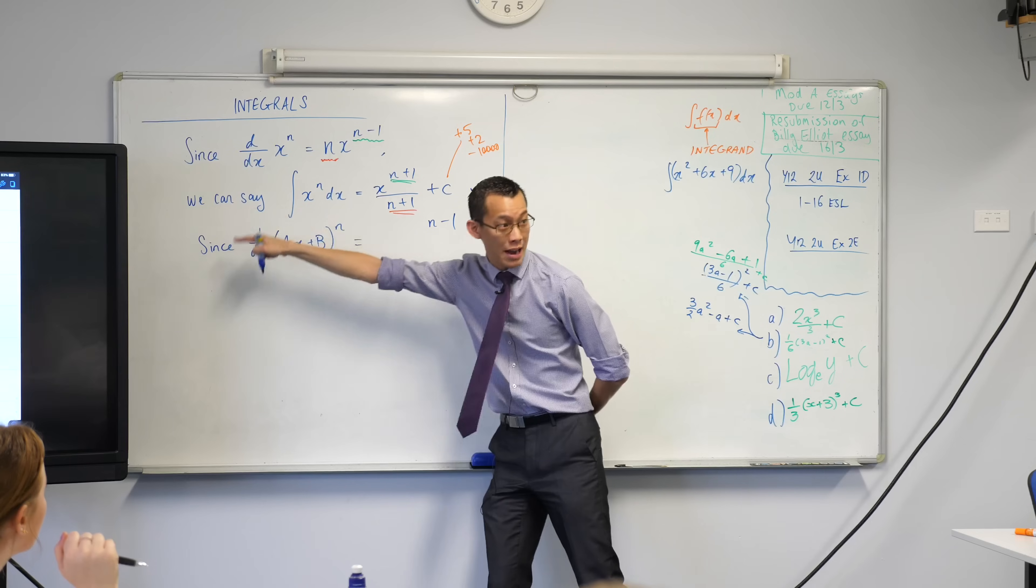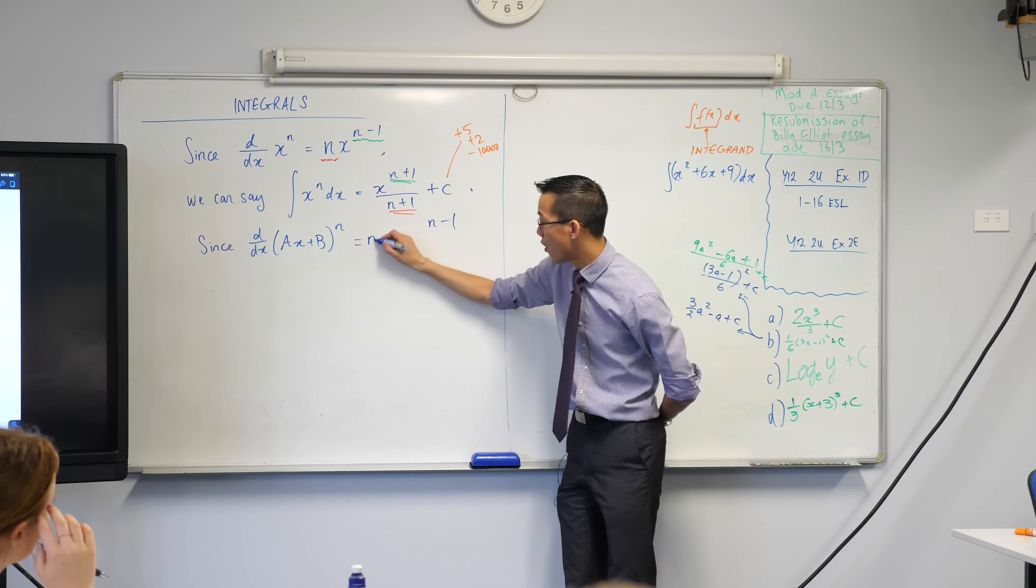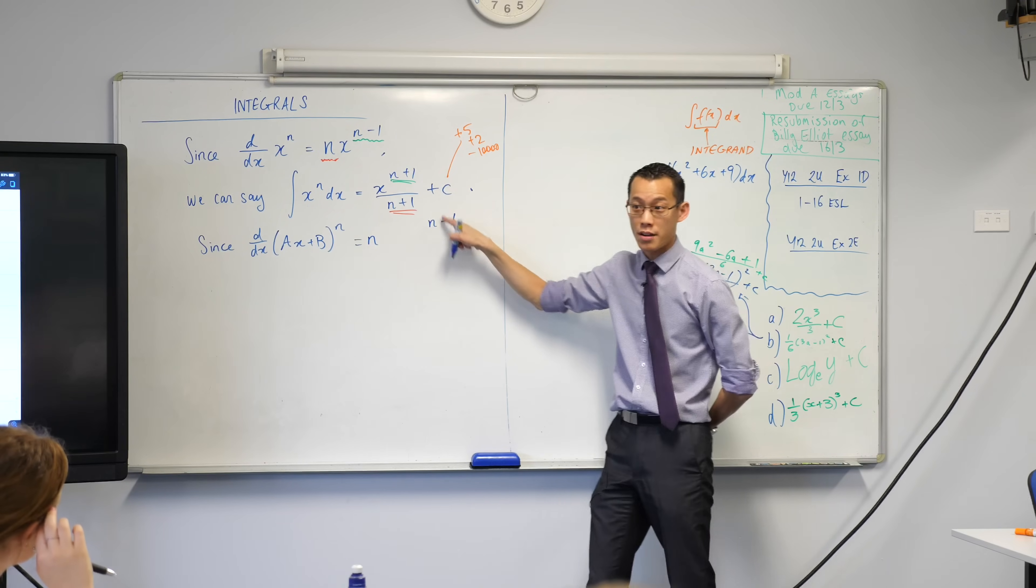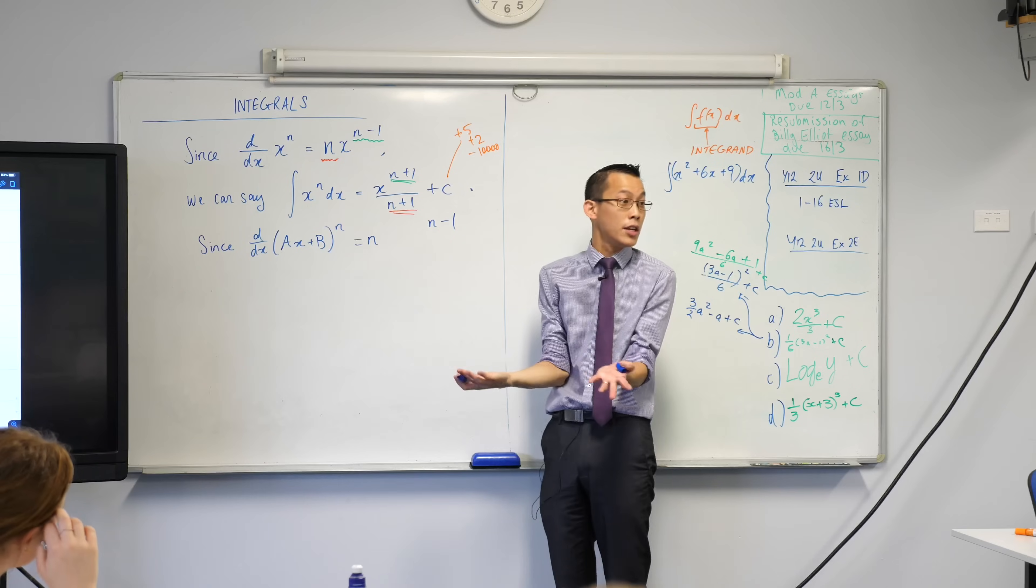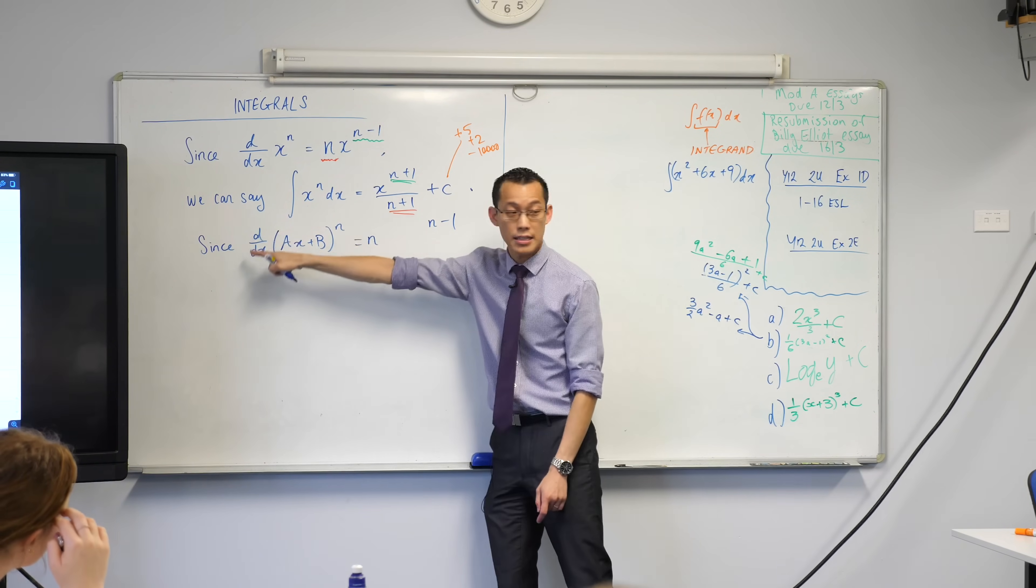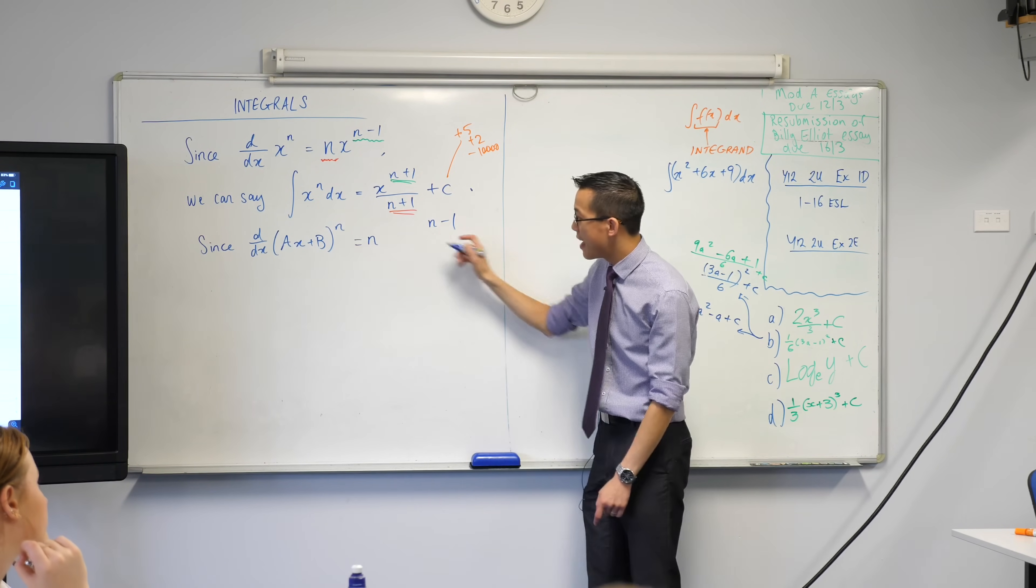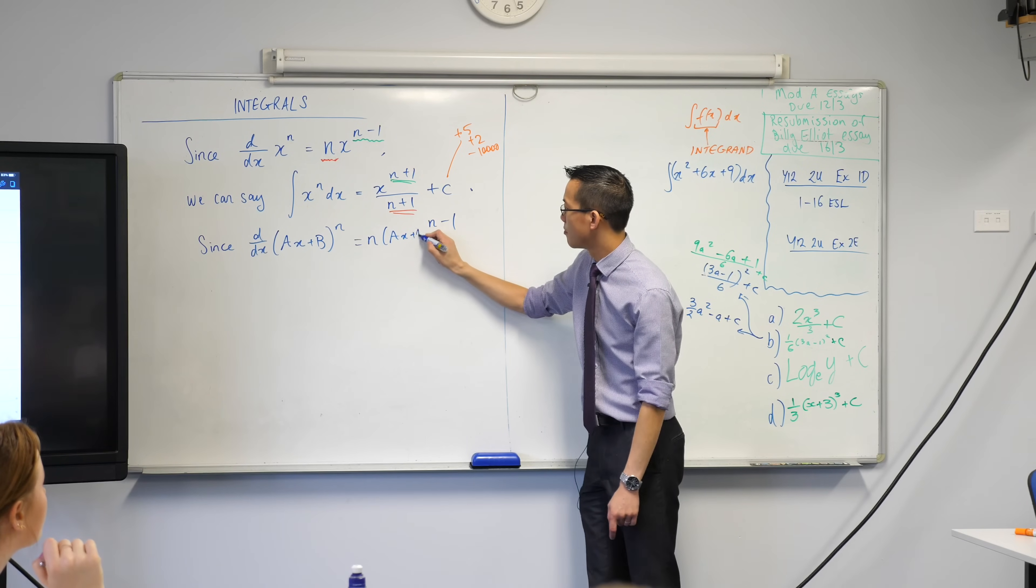Okay, I should probably have brought that power out the front first, because if I bring the n-1 out the front, that's actually not the correct derivative, is it? So I'll take the index out the front first, then I can reduce the power by one.